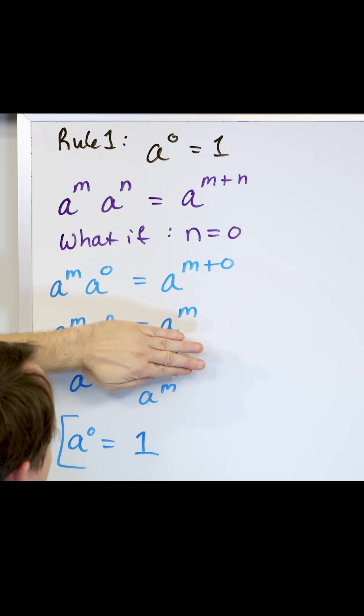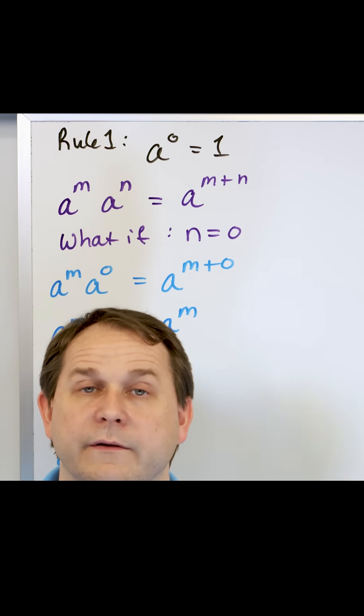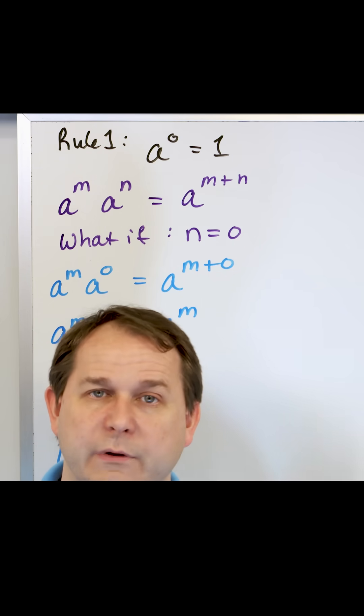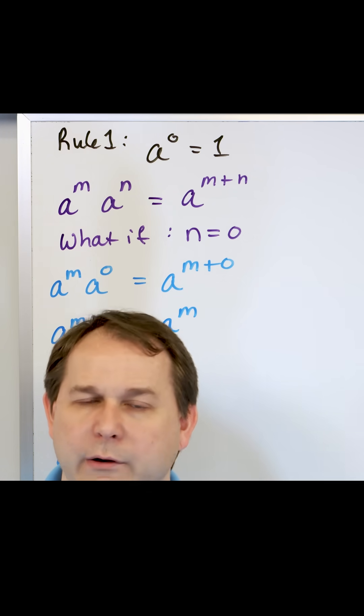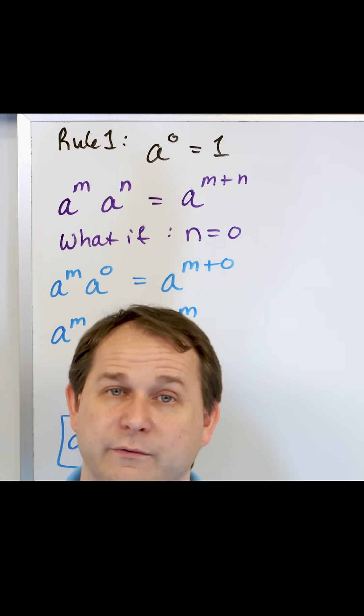But on the bottom, cover up the top, zero raised to any power is gonna give you zero. Zero squared is zero because zero times zero, right? It gives you zero. Zero raised to any power gives you zero.